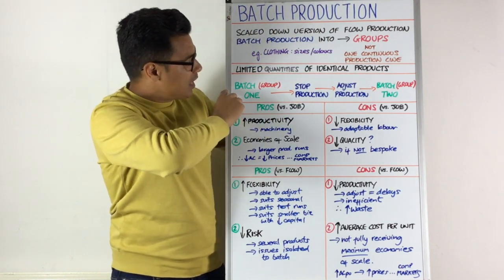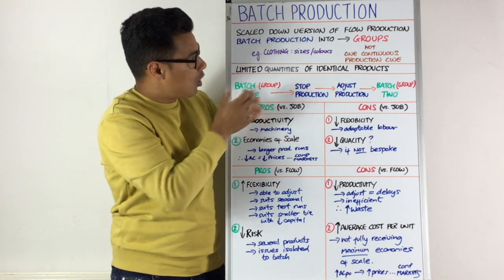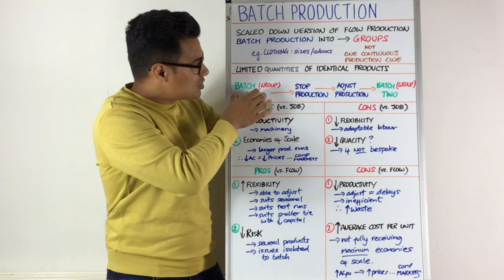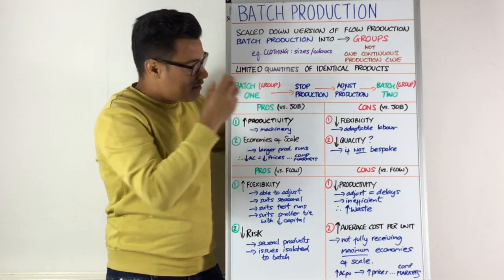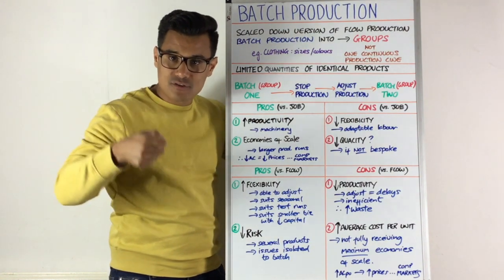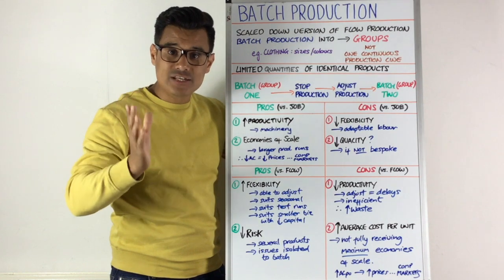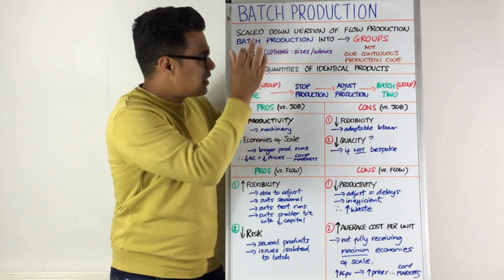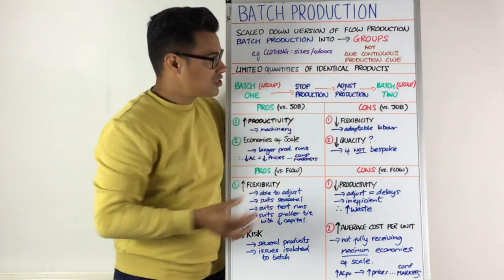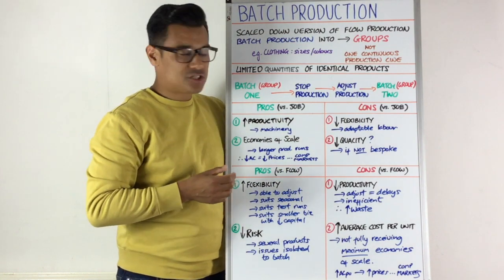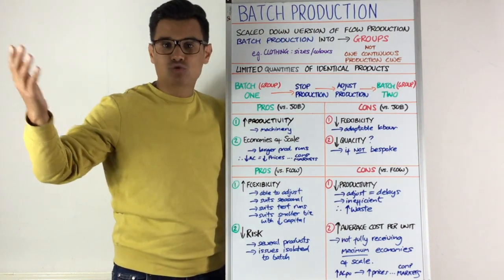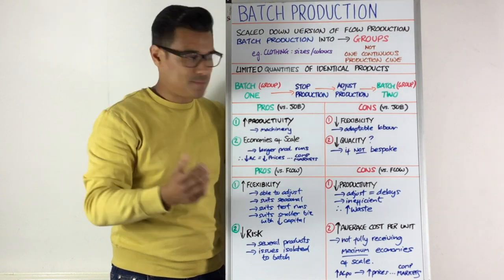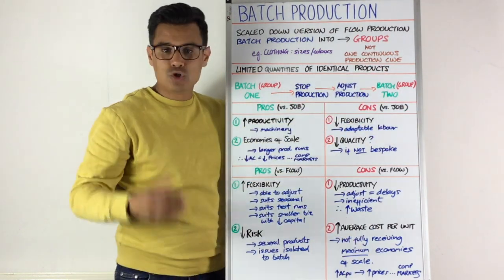Here's an example of batch production. We've got batch or group one — let's say that's medium red jumpers. You would group them, set up the machine, feed the red fabric through, and it will make those medium red jumpers. That's your first group. Then you stop production because you've made your limited quantity, adjust the production line, and now you might make large green jumpers — feed through the green fabric, adjust the production so it makes them slightly bigger, and that's batch two or group two.